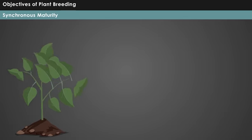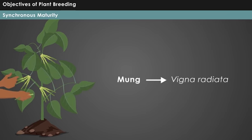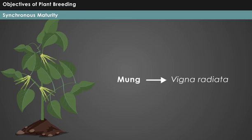Synchronous maturity: This type of maturity is highly needed in crops like mung, also known as Vigna radiata, where several pickings are mandatory.